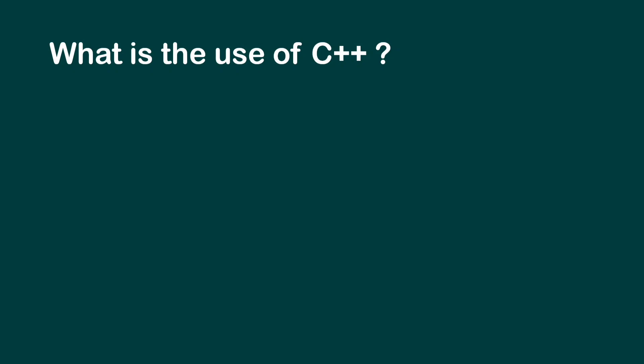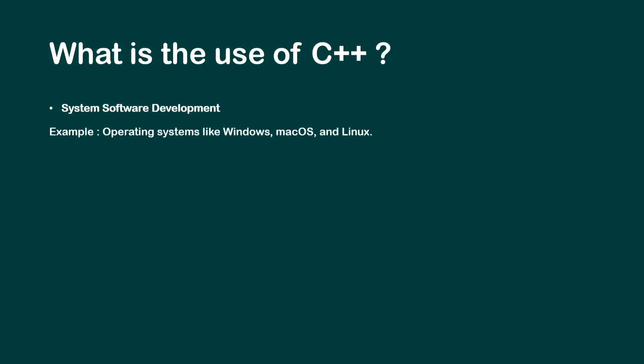Now let's see the uses of C++ programming. The first use is system software development. There are two main types of software: system software and application software. System software means operating systems like Windows, Mac, and Linux. Application software is what runs on top of the operating system — for example, MS Office and Chrome browser are application software.